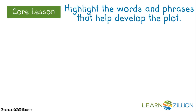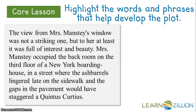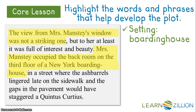Now, the next thing we need to do is highlight the words and phrases that help develop the plot. We're going to look at each of the three parts separately. 'The view from Mrs. Manstey's window was not a striking one' and 'Mrs. Manstey occupied the back room on the third floor of a New York boarding house' — both of these identify the setting. By identifying where Mrs. Manstey lives, Wharton is immediately identifying her as part of the lower class. This plays a big part in the plot because Mrs. Manstey and Mrs. Black are in different social classes and cannot understand each other's point of view — that is what causes all of the tension in the story.